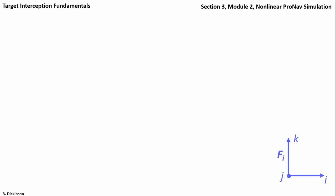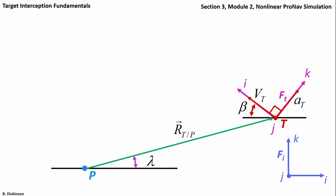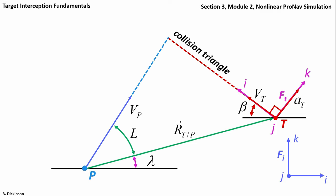Let's illustrate this engagement. Here's our inertial frame, our target, target velocity, its heading referenced to the inertial frame. The target can accelerate — note that it's perpendicular to VT so that VT changes direction but not magnitude. You can also attach a frame to the target. Then we have our pursuer, relative position to the target referenced to the inertial frame, the line-of-sight angle, pursuer velocity, and a lead angle that causes a collision triangle assuming the target does not maneuver — that is, its heading is constant.